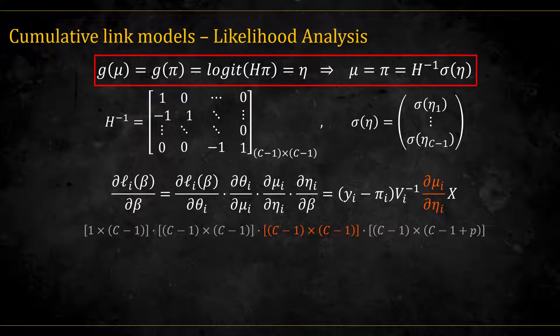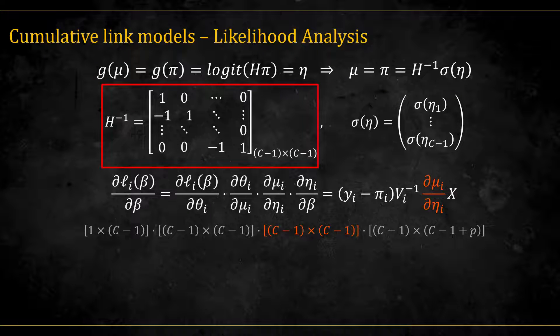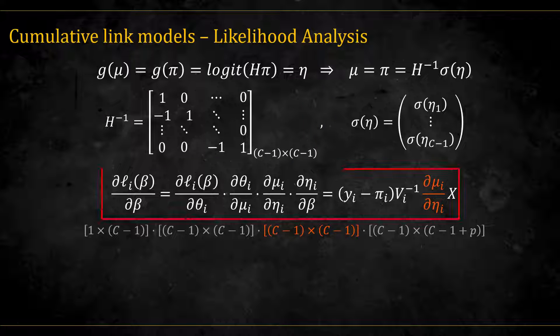If we invert the link function, we get that the vector of probabilities is equal to H inverse times the sigmoid, inverse logit. H inverse is equal to a matrix with 1 in the diagonal and minus 1 in the first element left of the diagonal. The GLM derivative is thus equal to what we've seen before, here for a single observation. We just need to find the derivative of the inverse link function. Note that these are the dimensions of each element here. 1 times c minus 1 for the y minus pi. c minus 1 times c minus 1 for the inverse v matrix. The same for the derivative of the inverse link function. And finally, for dx, it's c minus 1 times c minus 1 intercepts plus p for the covariates.